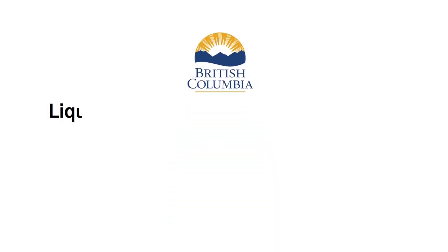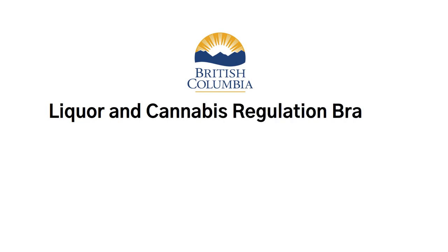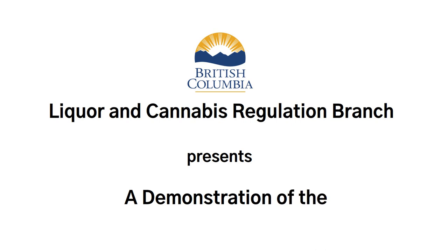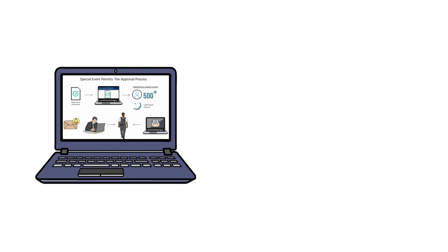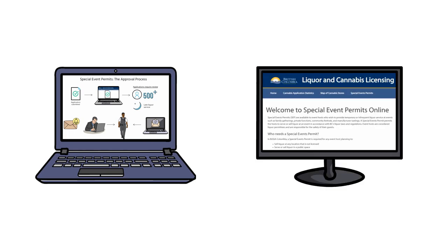This video is presented by the Liquor and Cannabis Regulation Branch. It provides a demonstration of the process that police of jurisdiction will use to review special event permits through the LCRB's Liquor and Cannabis Licensing Portal for Police. Our previous video provided an overview of the review process for a special event permit. In this video, we show you how to navigate our Online Licensing Portal to review special event permit applications.